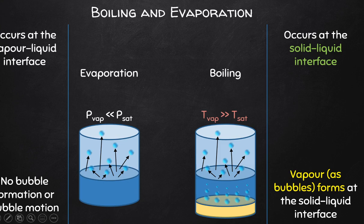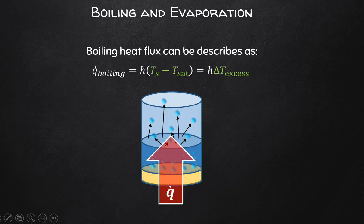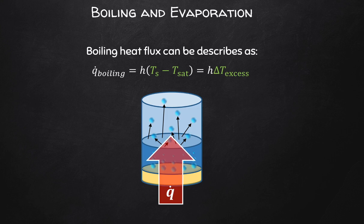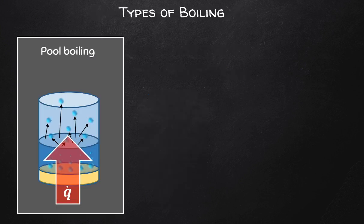Boiling may occur for a stationary liquid inside a tank, referred to as pool boiling. We add energy as Q-dot, and the temperature of the surface minus the saturation temperature gives us T-excess.